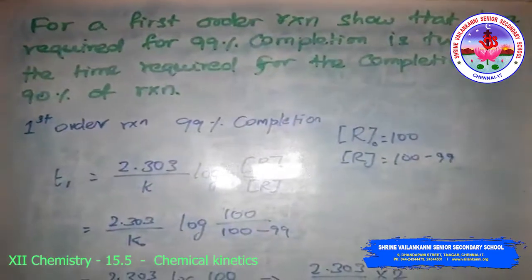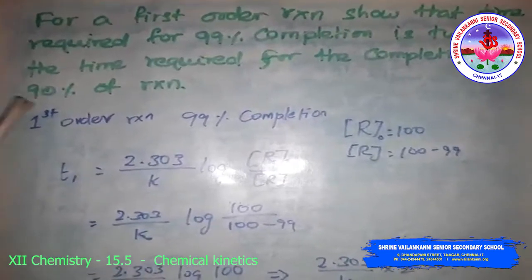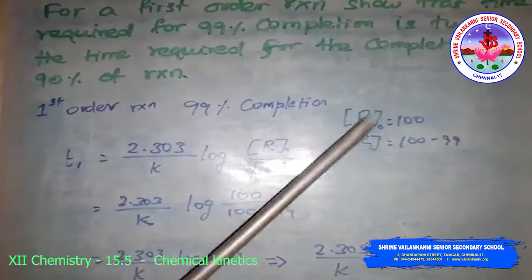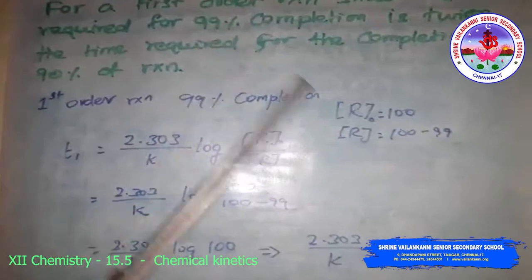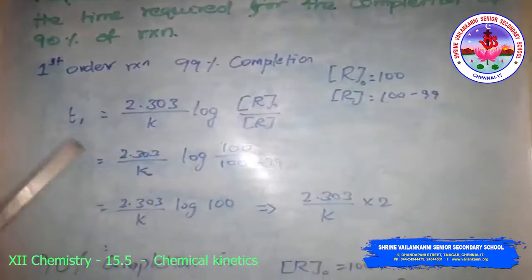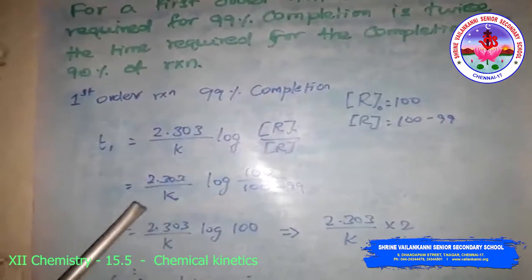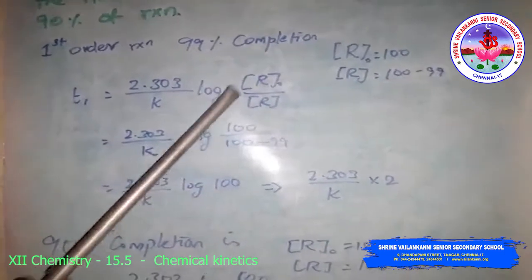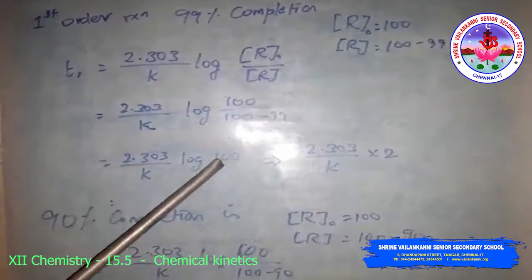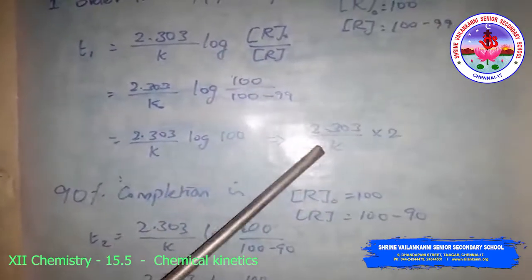For a first order reaction, the time required for 99% completion is twice the time required for 90% completion. For 99% completion: R₀ = 100, R = 100 − 99 = 1. So T₁ = (2.303/k) × log(100/1) = (2.303/k) × log 100. Since log 100 = 2, T₁ = (2.303/k) × 2.